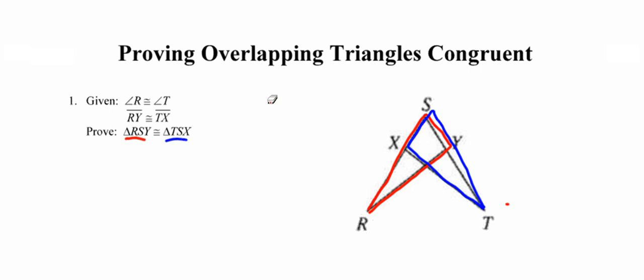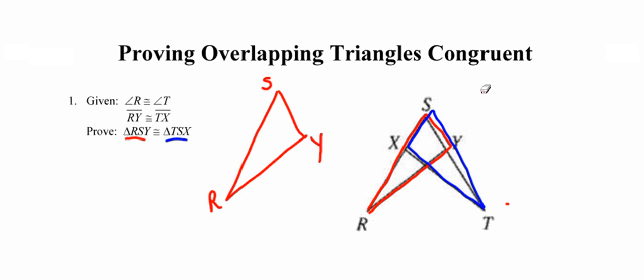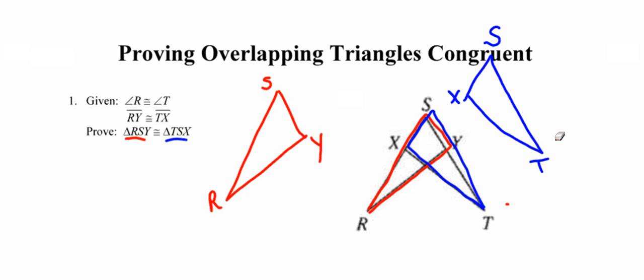I'm going to draw the red one, RSY, labeling each vertex, and then draw the blue one. When marking my givens, I'm going to mark them in the separated triangles. So we know that angle R is congruent to angle T, and we know that side RY is congruent to side TX. And we're being asked to prove that these triangles are congruent.